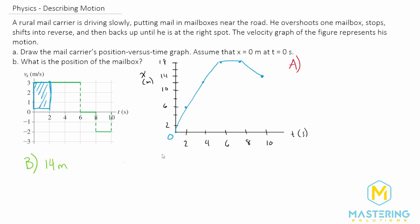The second way is to add all the areas under the positive curve, then add all the areas under the negative curve. We had three sections of six, so that is 18 for the total positive area. Then we had a negative four for the area under the negative curve. So the position is again 14 meters for Part B.